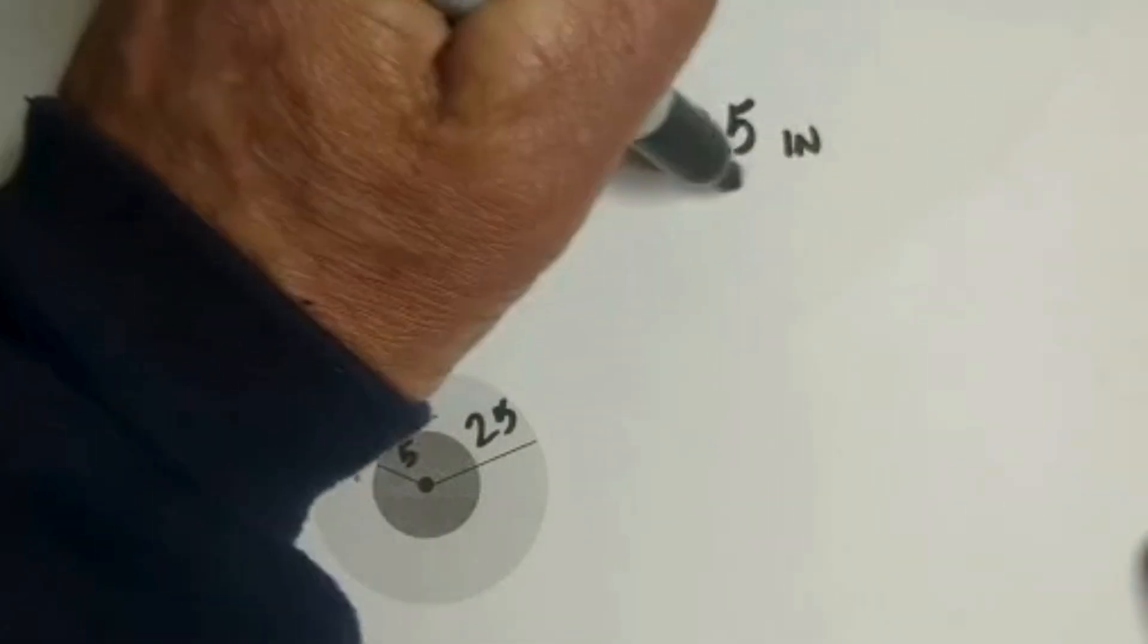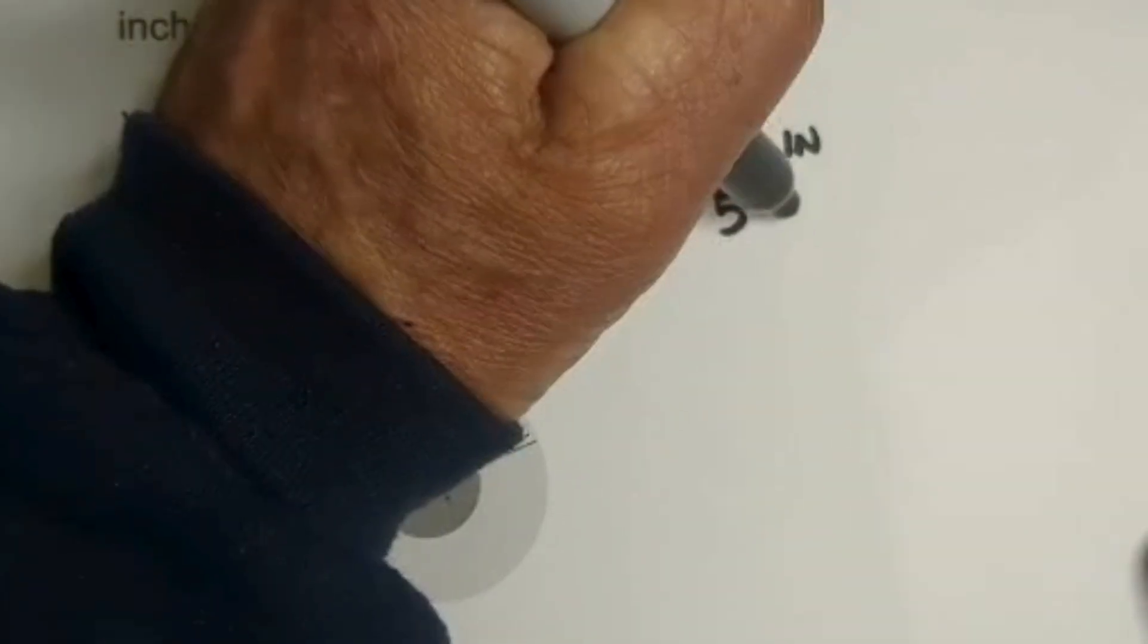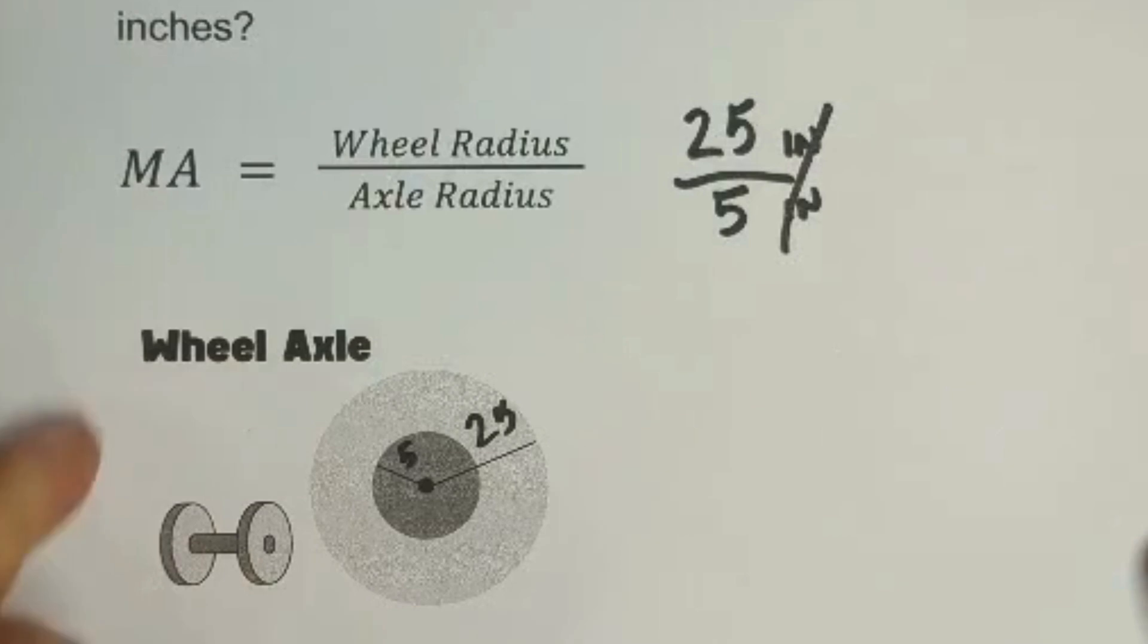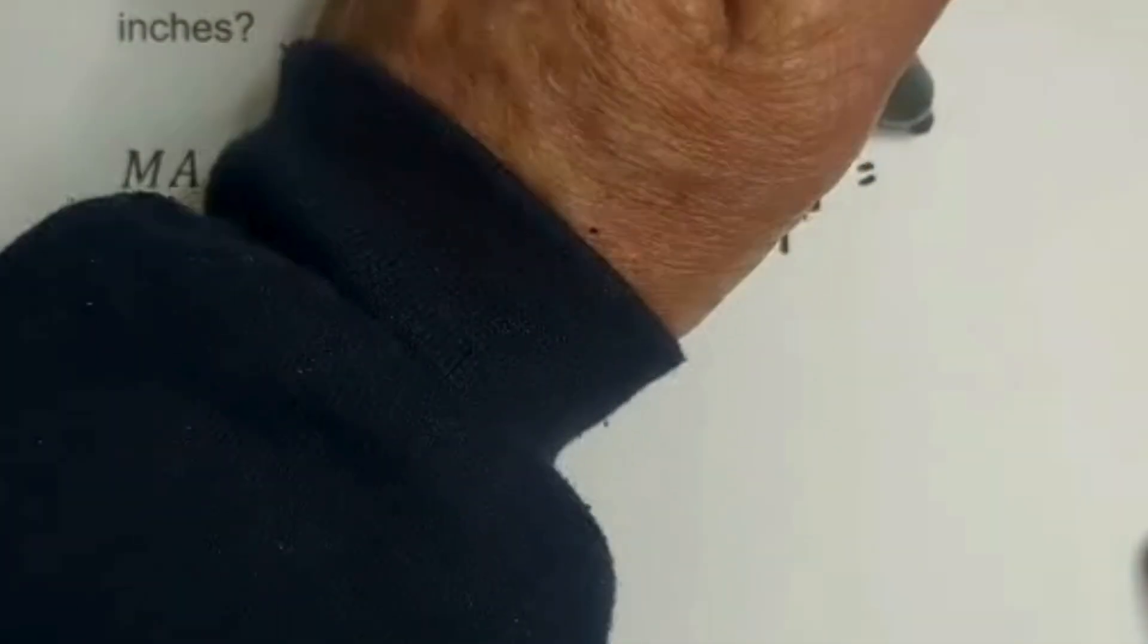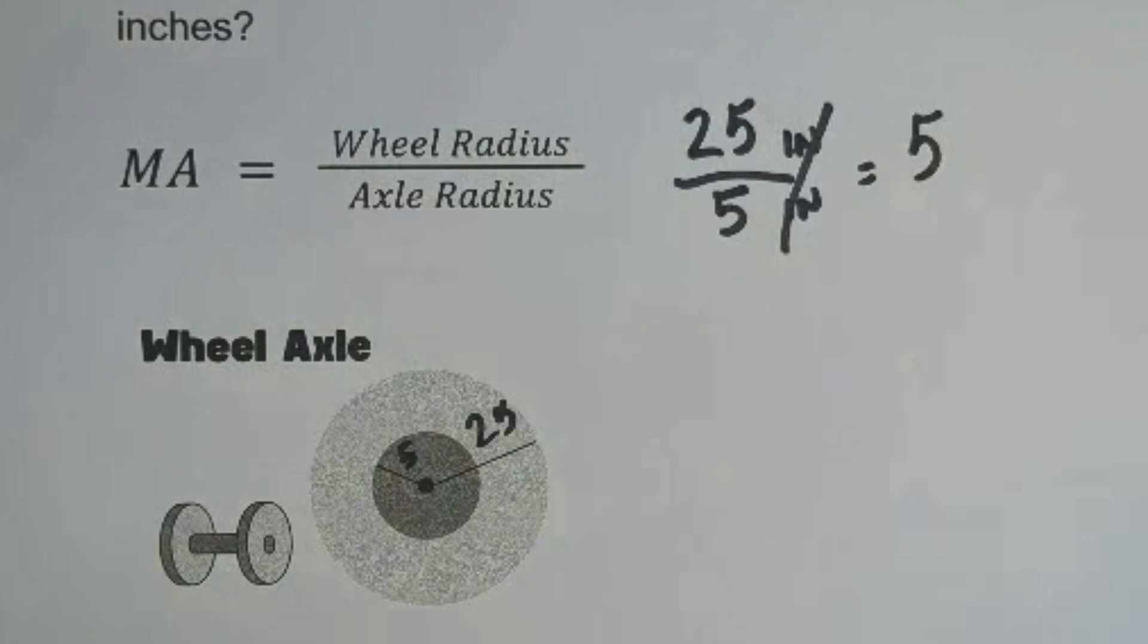We have 25 inches divided by 5 inches. Remember, the units will cancel and that gives you a mechanical advantage of 5.